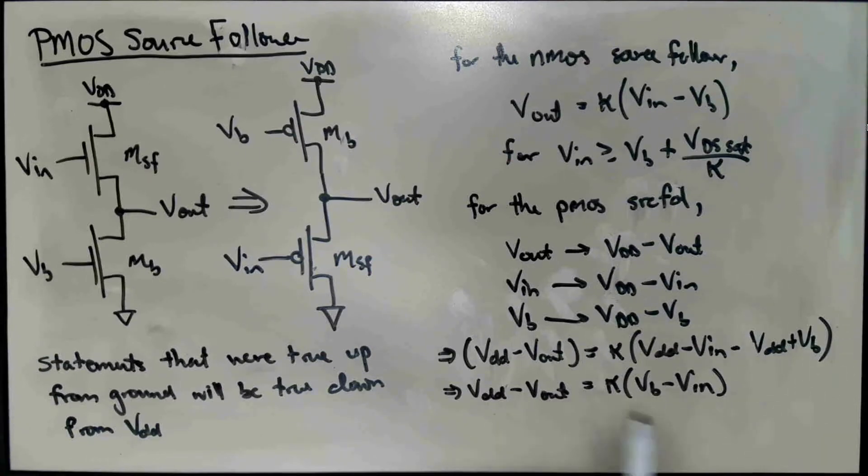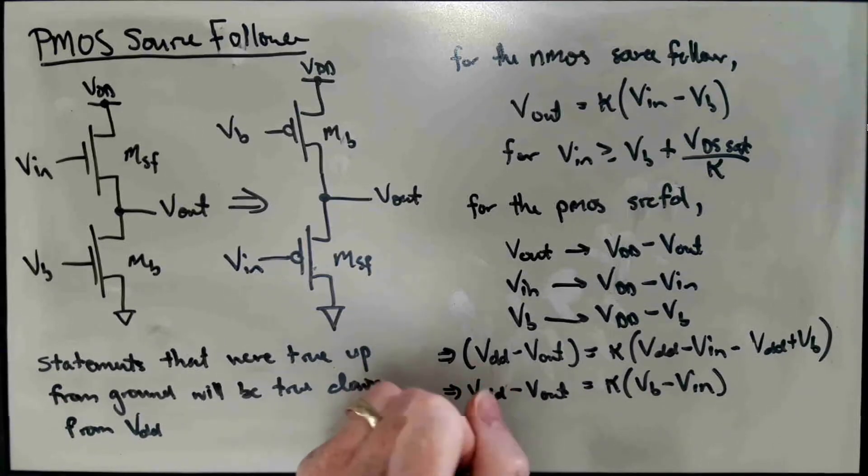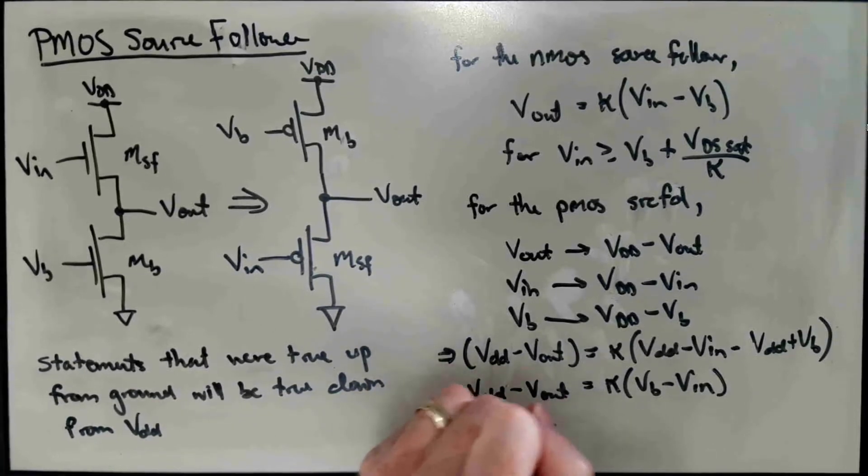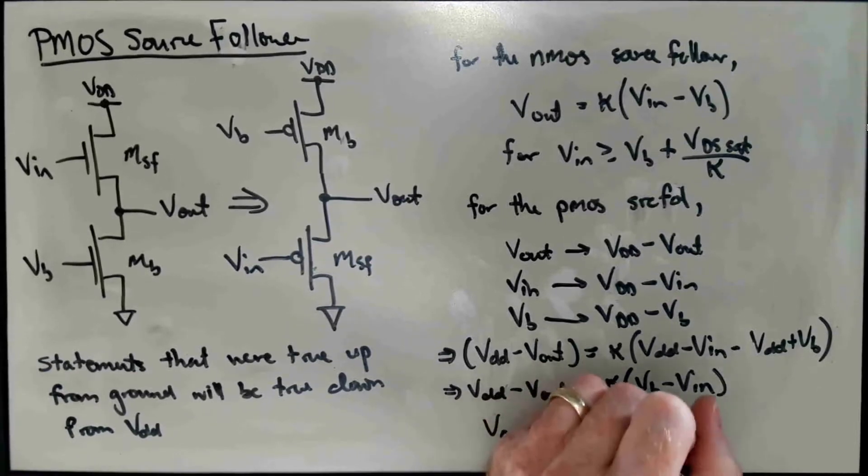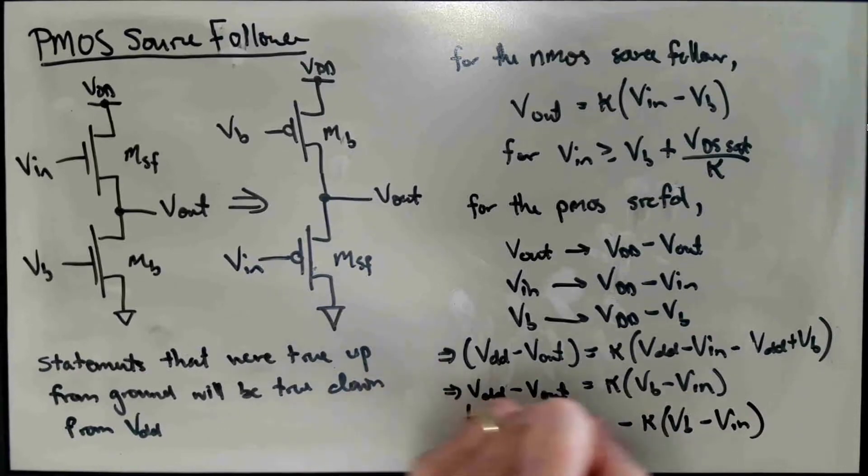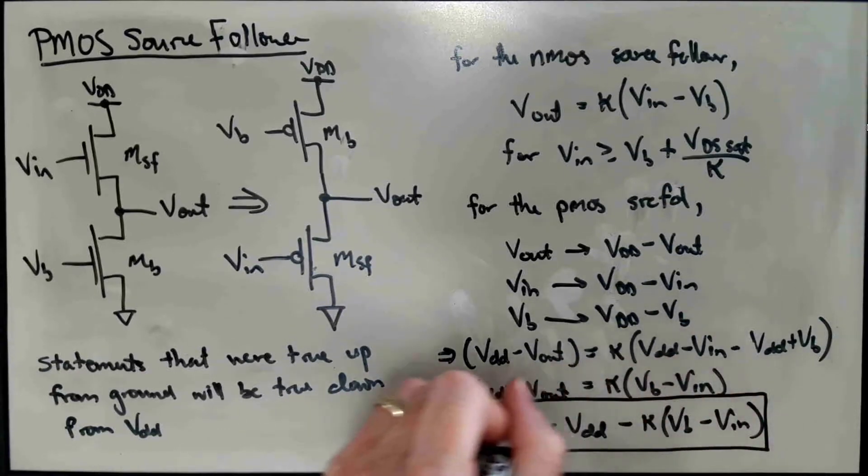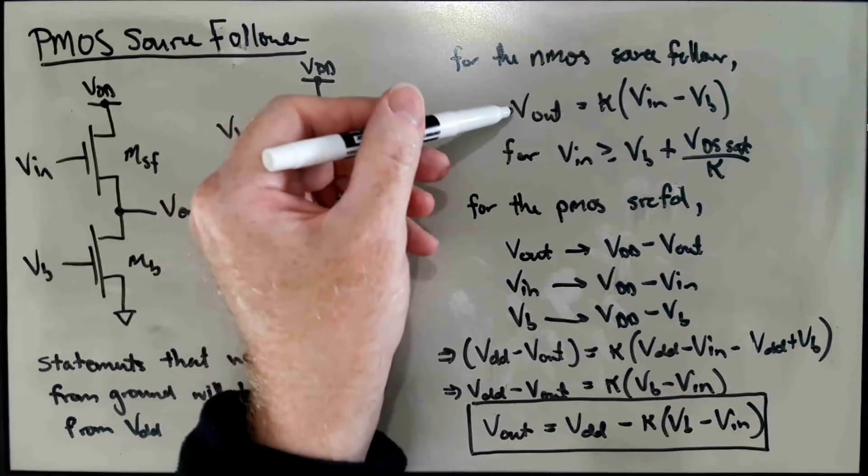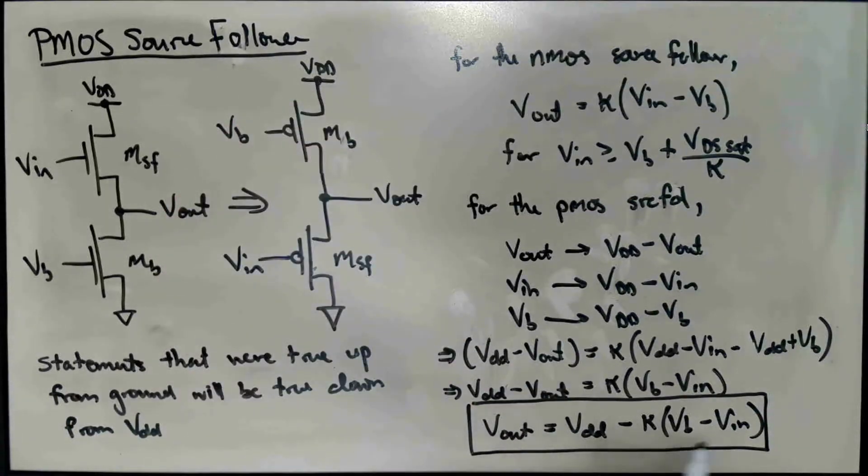So we get VDD minus Vout equals Kappa times VB minus VIN. We can rearrange this and solve for Vout. So if we move the Vout to that side and move this to the other side, we get Vout equals VDD minus Kappa times VB minus VIN.